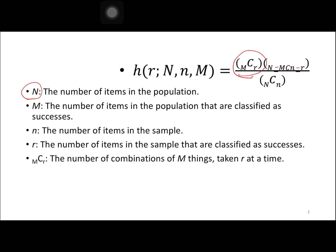For this formula, capital N is the number of items in the population. M is the number of items in the population that are classified as successes. Small letter n is the number of items in the sample. R is the number of items in the sample that are classified as successes. And M_C_R represents the number of combinations of M things taken R at a time.